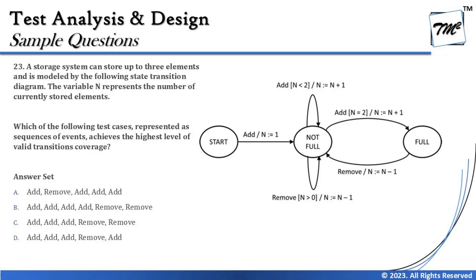The next question is question number 23, which covers state transition testing — again, one of its kind, so let's be extra cautious. It says: a storage system can store up to three elements, and is modeled by the following state transition diagram. The variable n represents the number of currently stored elements. Which of the following test cases, represented as a sequence of events, achieves the highest level of valid transition coverage?